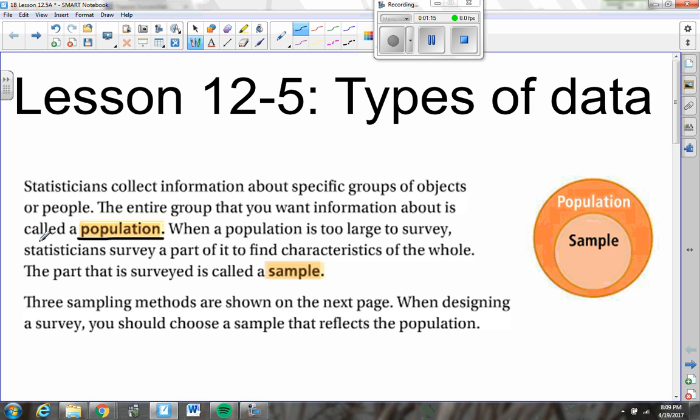Now, when a population is too large to survey or gather information from, we survey or gather information from a part of that population to find characteristics of the whole. That survey or the part of the population that is surveyed is called the sample. So there's a very key difference between a sample and a population. A sample is always a part of a population. Here's a Venn diagram to illustrate it. The sample is within the population.